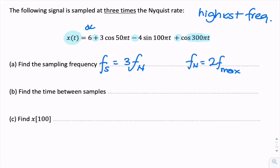So, we could say F max equals 300 pi divided by 2 pi. And if you use that to find the Nyquist rate and then multiply that by three, that will give you your answer to part A. So, that will be 3 times 300 is 900. So, that's 900 hertz.